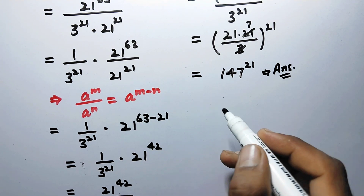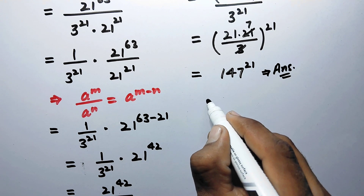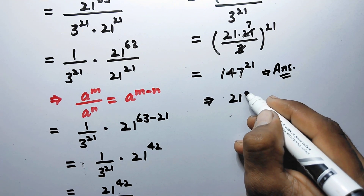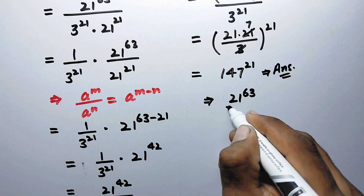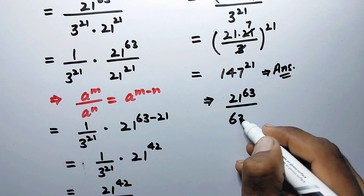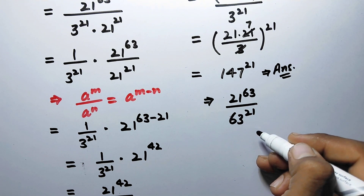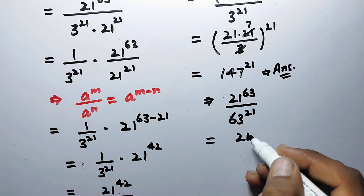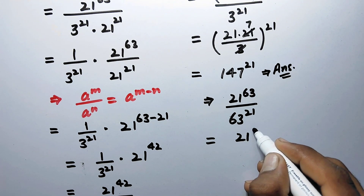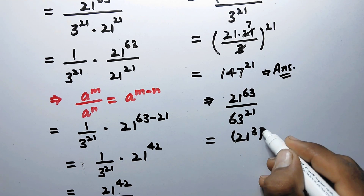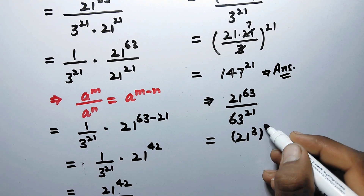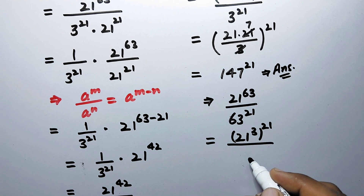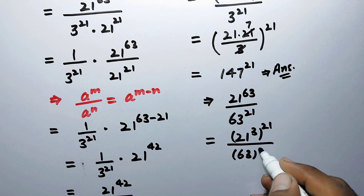We may also solve this problem by another method. Here we write the original fraction: 21 to power 63 over 63 to power 21. This can be written by splitting the power 63 as 3 times 21, giving 21 to power (3 times 21) divided by 63 to power 21.